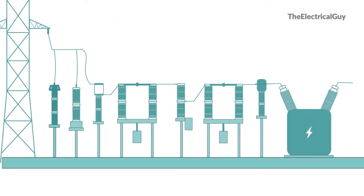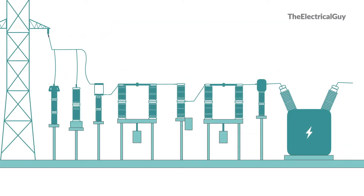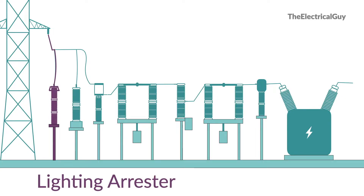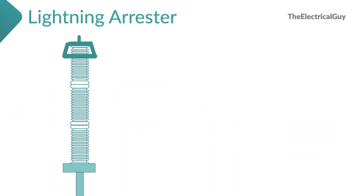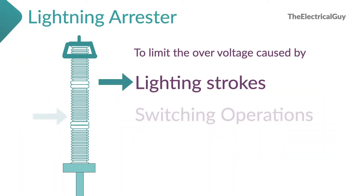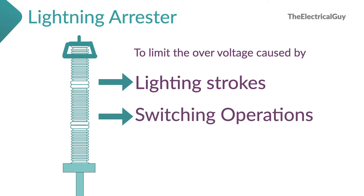The purpose of a surge arrestor or lightning arrestor is to limit the overvoltage that may occur due to either lightning strokes or switching surges. Majority of people will say the purpose is only to limit overvoltage due to lightning, but it also helps in limiting overvoltage that may occur due to switching operations. Take note of that.